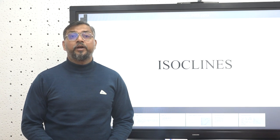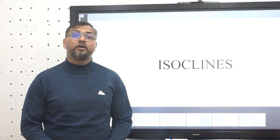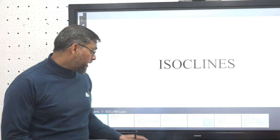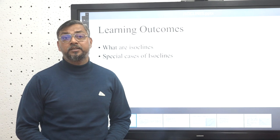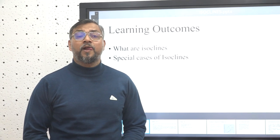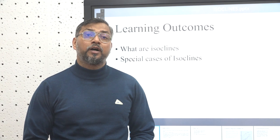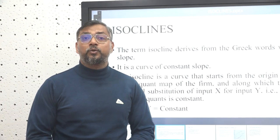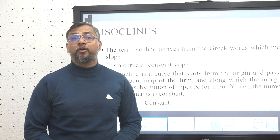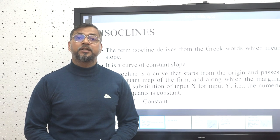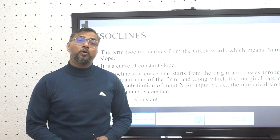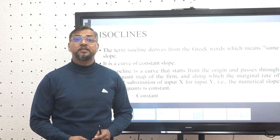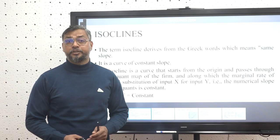Good learners, today we will be discussing isoclines. After completion of this course you will be able to understand what isoclines are and some special cases of isoclines. The term isocline is derived from a Greek word that means 'same slope,' so we can say that an isocline is a curve that has the same slope or a constant slope.